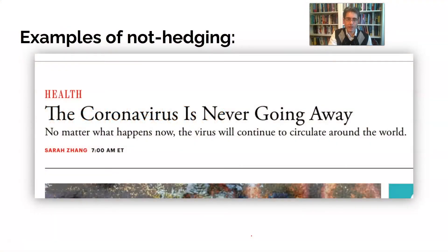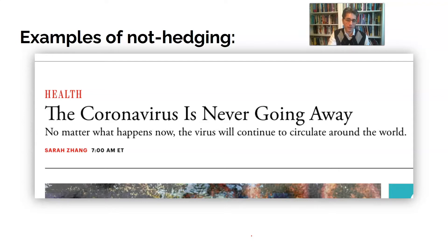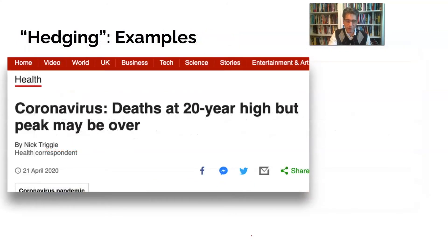This is called hedging. Here's an example of non-hedging — the kind you can see in the news: 'The coronavirus is never going away. No matter what happens, the virus will continue to circulate around the world.' You would almost never see this in a research article without some kind of hedging. You can make this kind of assertion with so much confidence in a newspaper or blog, but obviously when scientists use data to draw inferences, it's not possible to make such strong generalizations.